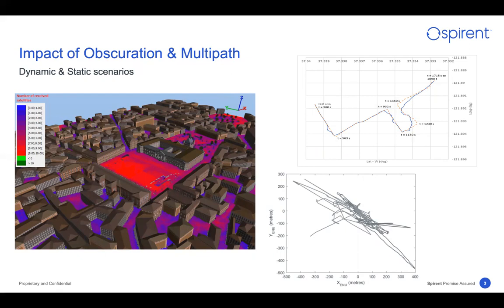The same applies to the bottom plot. Here, however, the scenario is not dynamic — it is a static test. And you can see how much multipath could impact the performance of a static GNSS receiver when it does not account for the multipath effect.